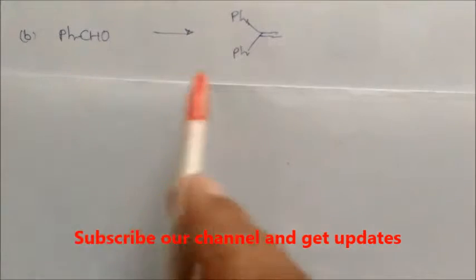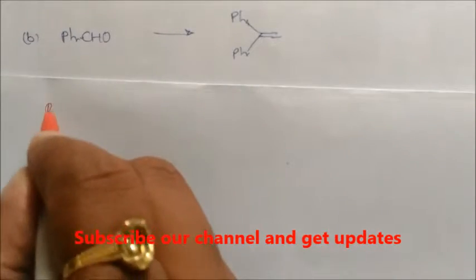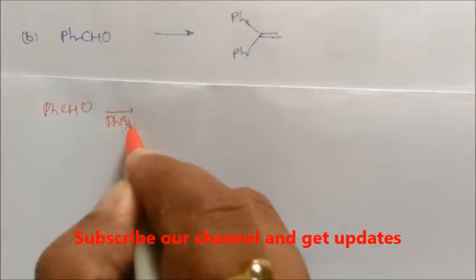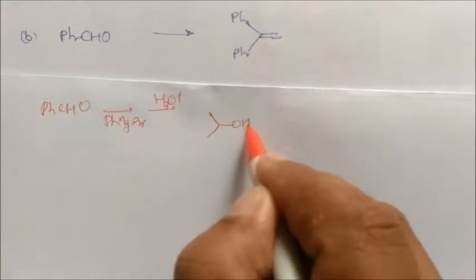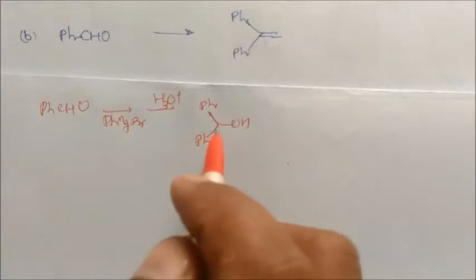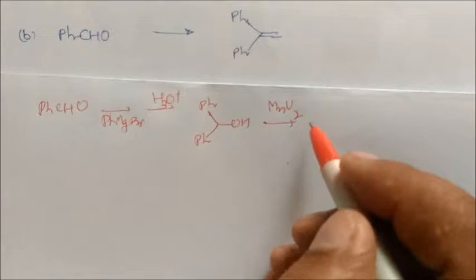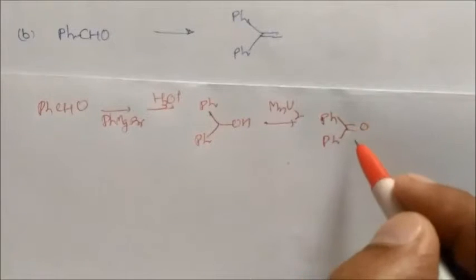The second problem is benzaldehyde to diphenyl ketone. We take PhCHO and react it with phenyl magnesium bromide (PhMgBr) followed by hydrolysis. You get a product with OH and two phenyl groups (Ph-CH(OH)-Ph). Then using MnO2, this converts to the diphenyl ketone (Ph-CO-Ph).